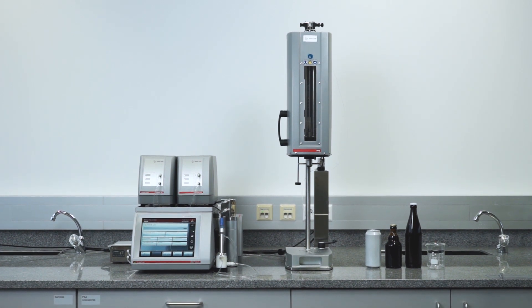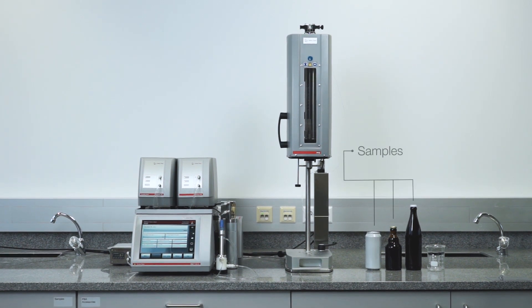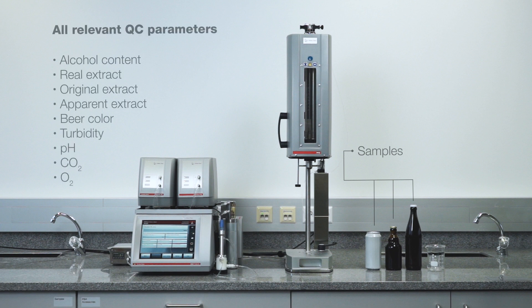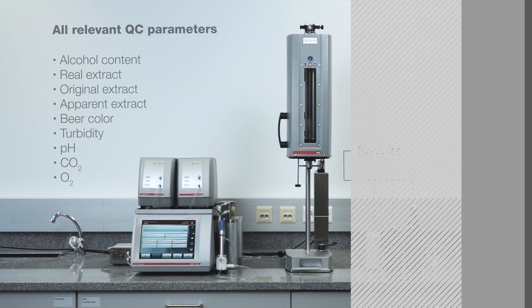PBA-B is in use for the analysis of all types of beers including beer mixed drinks, low and non-alcoholic beer, and provides all relevant QC parameters. As no sample preparation is required, PBA-B is the ideal solution for quick and accurate analysis in packaged beer.